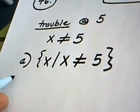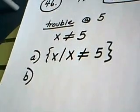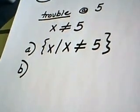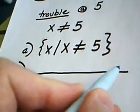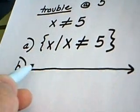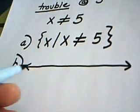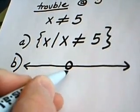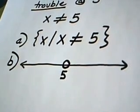Part B of my question asks me to write the answer using interval notation. Now, the way I like to teach my students to do that, let's draw a number line. And let's throw out the troubled number. In other words, I'm going to find 5 and I'm going to put an open circle there, which basically means I'm tossing it out.